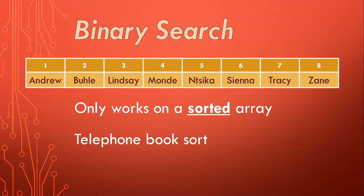I like to call this search the telephone book sort. In the old days, we had a telephone book which had all the numbers of everyone in your province or city. If you were looking for someone's name — say we were looking for a Smith — what you could do is take that telephone book, open up in the middle, find out where you are, and come across the M's. You'd know that Smith would be on the right-hand side of the M's, so you'd forget about the first half and just look at the second half. This binary search works on that same principle.